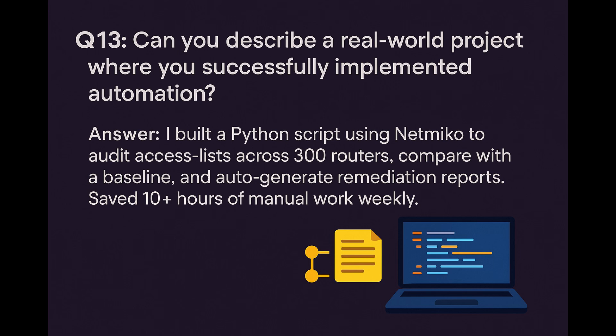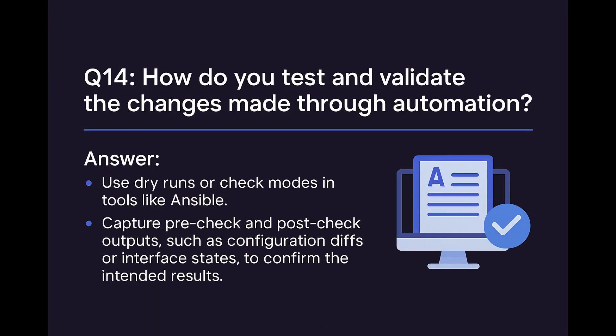Question 14: How do you validate changes before and after automation? Use dry runs, pre-checks, and post-checks. For example, compare config diffs or capture interface states before and after changes.